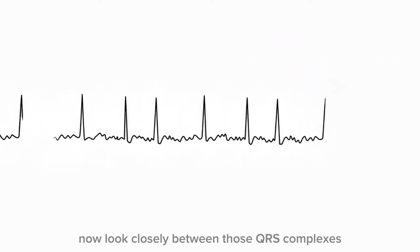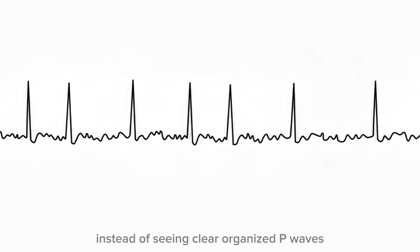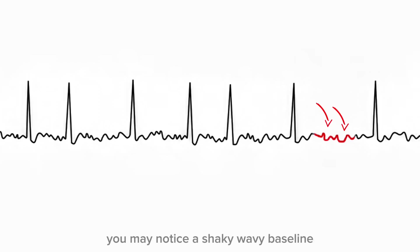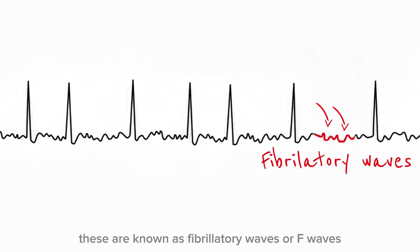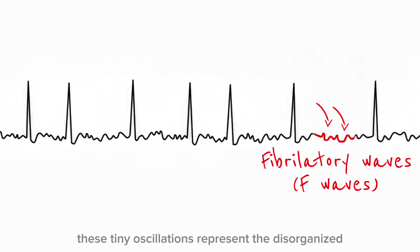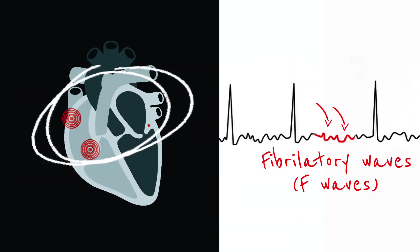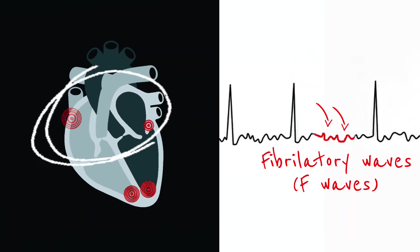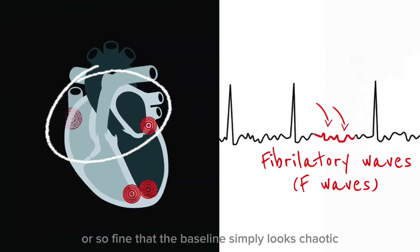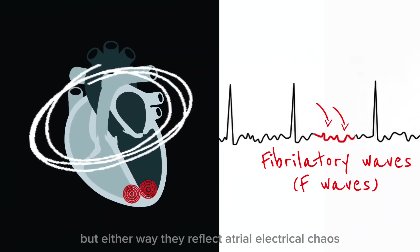Now look closely between those QRS complexes. Instead of seeing clear, organized P waves, you may notice a shaky, wavy baseline. These are known as fibrillatory waves, or F waves. These tiny oscillations represent the disorganized electrical activity of the atria. They may be coarse and obvious, or so fine that the baseline simply looks chaotic — but either way, they reflect atrial electrical chaos.